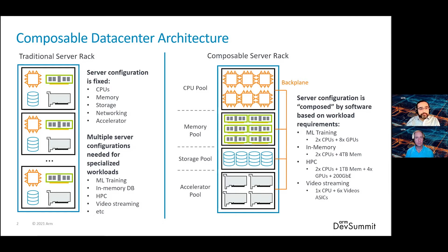During runtime, using software-defined principles, you can allocate an application, for example, some CPUs, 16 gigabytes of DRAM, 4 terabytes of storage, and one accelerator for the task. Once the application finishes, all of this can be repurposed or reused for other applications. As you adapt an application to the composable architecture, you can optimize and only provision resources that the application really needs, so the over-provisioning goes away. This is a very powerful tool for large data centers to improve the TCO or total cost of ownership of their infrastructure in the cloud.